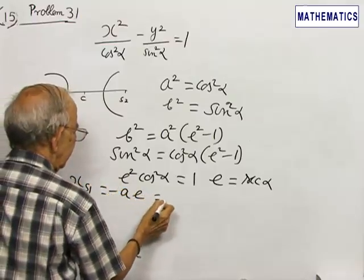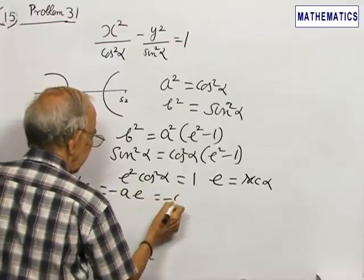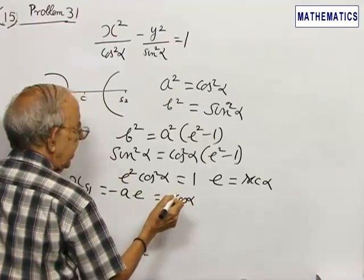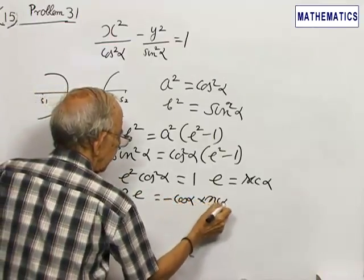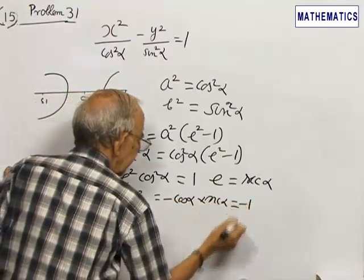a is cos alpha, e is secant alpha, that is equal to minus 1.